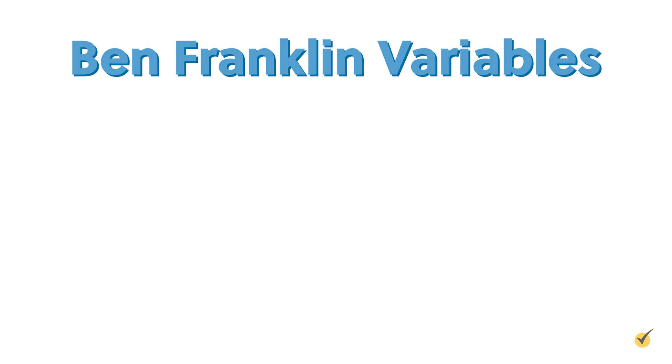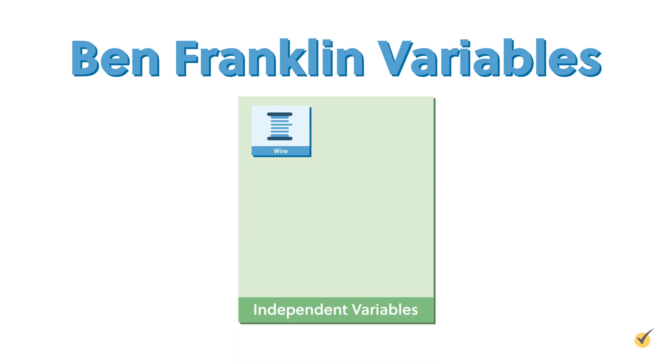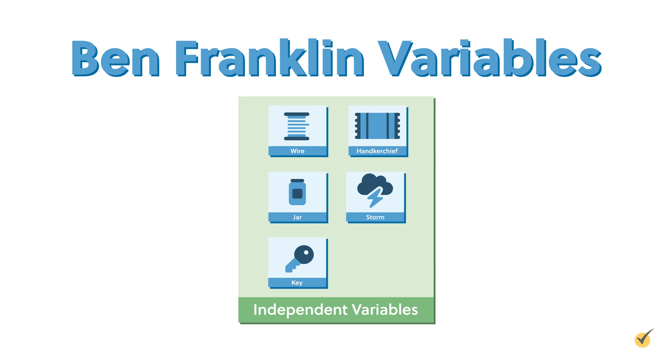Do you know about Benjamin Franklin's legendary kite experiment? In 1752, he constructed a kite out of a handkerchief and attached a conductive wire to the top of the kite to act as a lightning rod, along with a metal key and a Leyden jar. He then flew the kite during a thunderstorm. Franklin noticed that when he moved his hand near the key, he felt a spark, proving that the kite had collected electrical charge from the storm clouds. The success of the experiment led to the creation of the lightning rod. In this experiment, the independent variables could include the kite's construction materials and the weather conditions chosen. The independent variable is the one you're manipulating or changing on purpose — it's the cause in your cause-and-effect relationship.